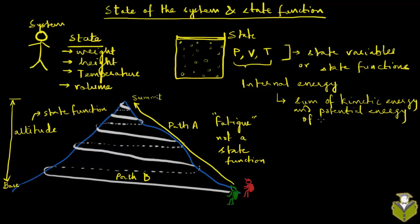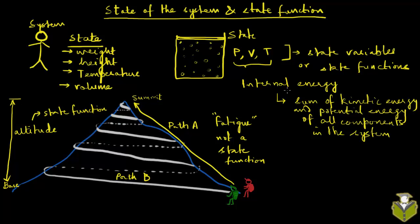Internal energy is defined as the sum of kinetic energy and potential energy of all components in the system. Again, this is a state function, so the values of internal energy are only going to depend on the initial and final states of the system — it does not matter how the system goes from one state to the other. Internal energy can be changed either by transfer of heat between the system and surroundings, or by doing work on the system or by the system doing work on the surroundings. We will talk more about the relationships between work, heat, and energy in the next video.